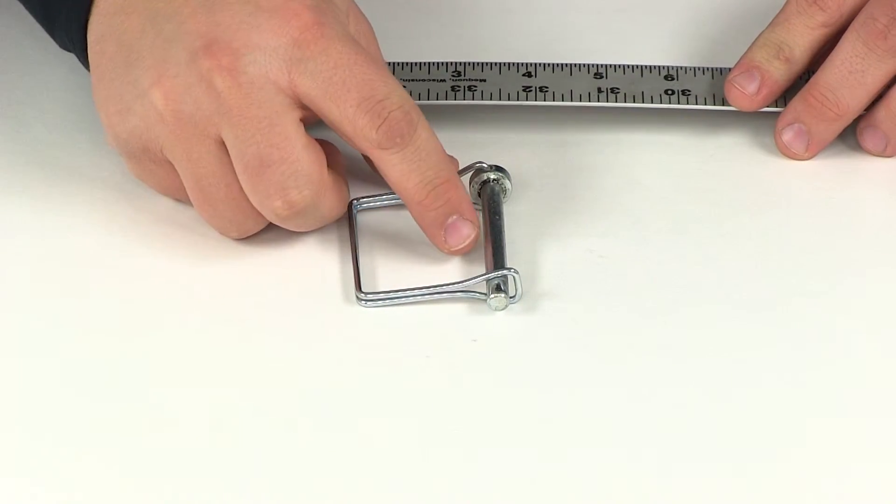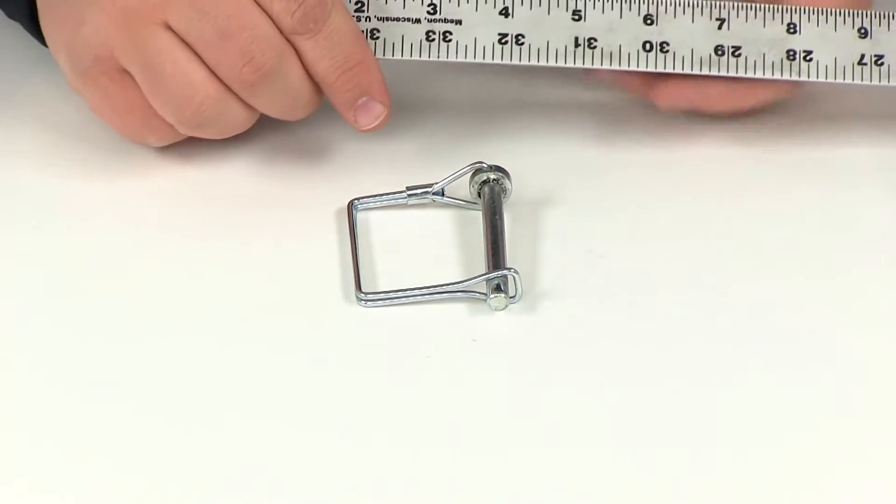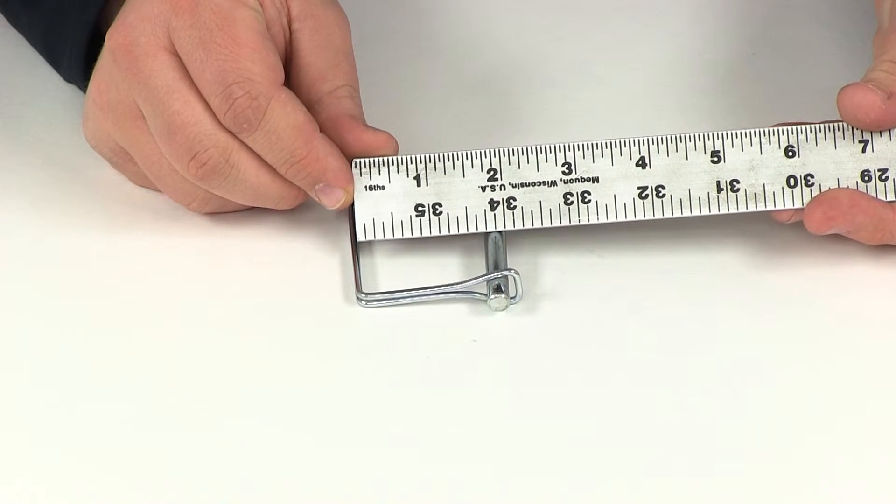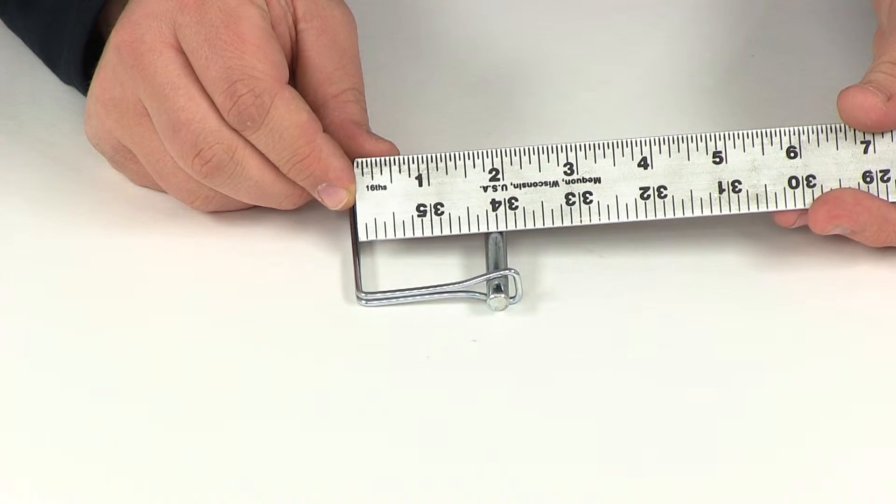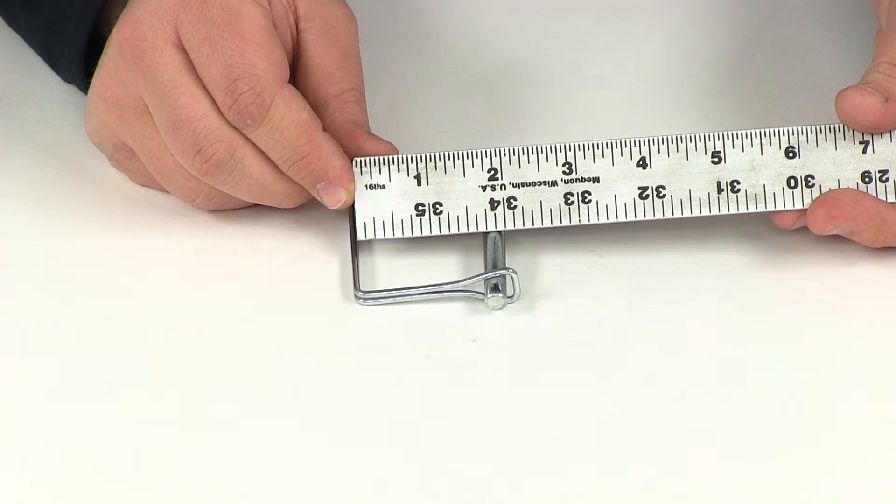And then the measurement that we have from the top of the pin to the bottom of that double wire mechanism, that's going to give us a measurement of about one and five eighths of an inch.